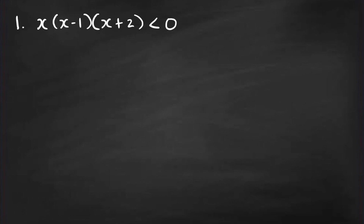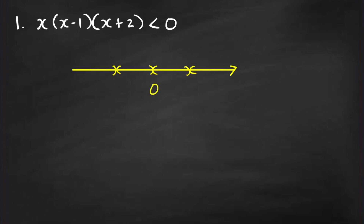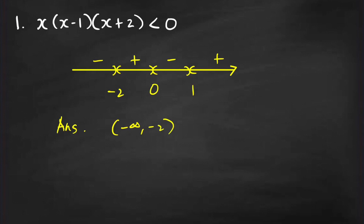Consider this first inequality: x times x minus 1 times x plus 2 less than 0. To solve this, I'm going to draw a real line and divide it into 3 parts. It has three zeros: 0, 1, and negative 2. The signs must be positive, negative, positive, negative. And the answer is negative infinity to negative 2, union with 0 to 1.